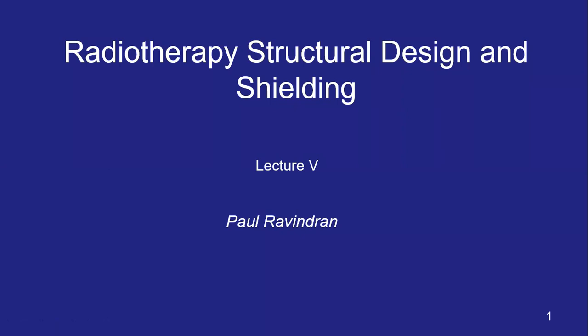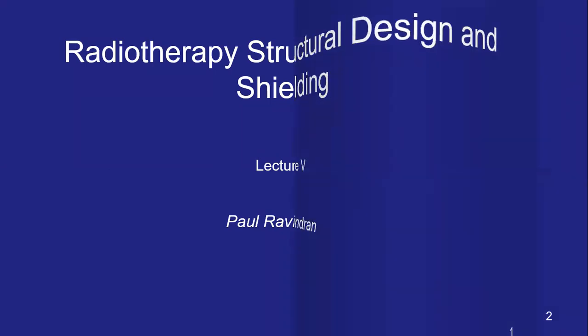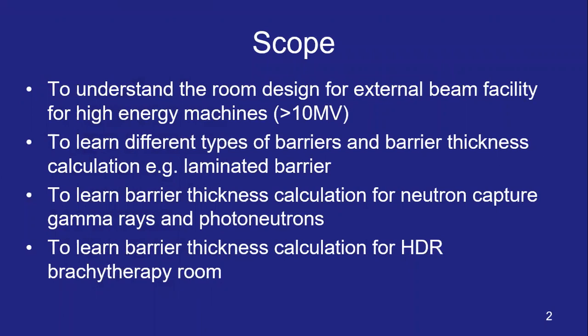Hello, I am happy to welcome you to the second lecture of Part 2 of Radiation Protection. In this lecture, we will discuss more about shielding considerations for bunkers, including high energy bunkers and HDR bunkers. The scope covers room design for external beam facilities for high energy machines beyond 10 MV, different types of barriers and laminated barrier thickness, barrier thickness calculation for neutron capture gamma rays and photoneutrons beyond 10 MV, and barrier thickness calculation for HDR brachytherapy rooms.